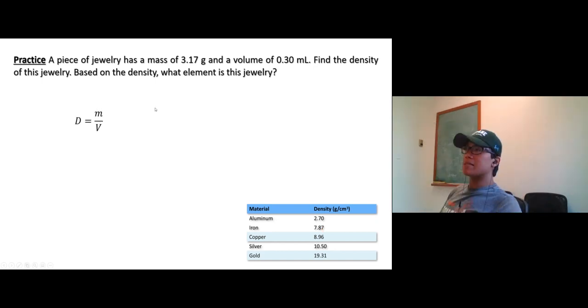Density equals m over V. Mass is 3.17 grams, volume is 0.30 milliliters. You should get about 10.6 grams per milliliter - three significant figures. You can say it's around 11. Now which jewelry is this? 10.6 - which one is closer to 10.6? Silver, right there, 10.5.